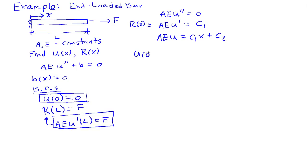If I evaluate u of zero, I find that one over AE times C1 times zero plus C2 must equal zero. So that immediately tells me that C2 equals zero. And then I have my other boundary condition, AE u prime of L equals F. So that tells me that AE u prime of L equals F equals C1. So I found out that C1 equals F.